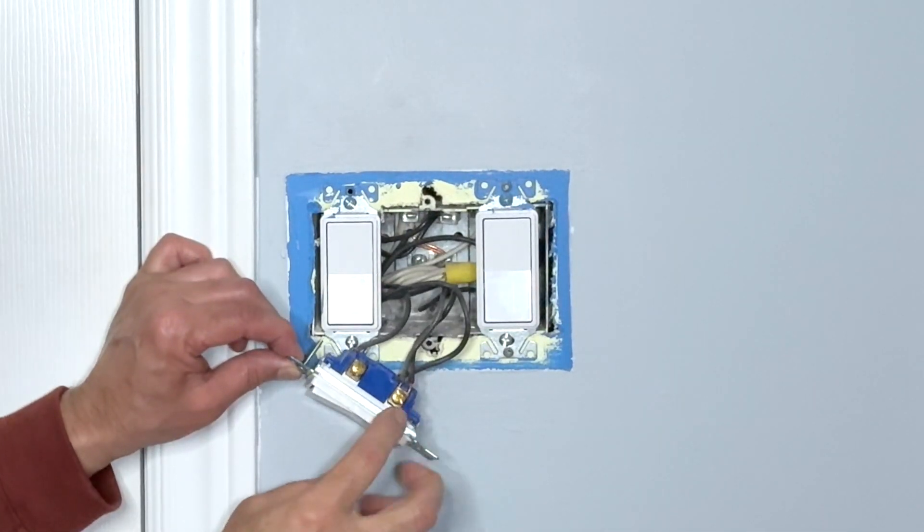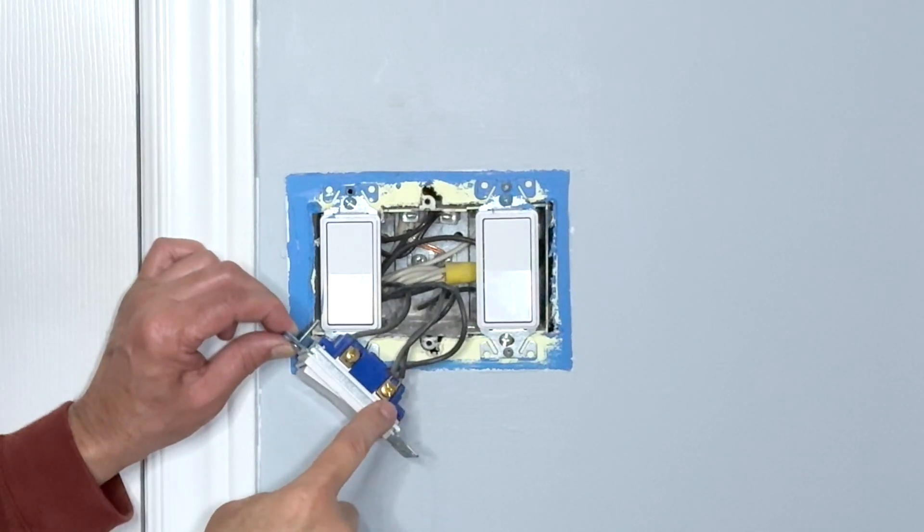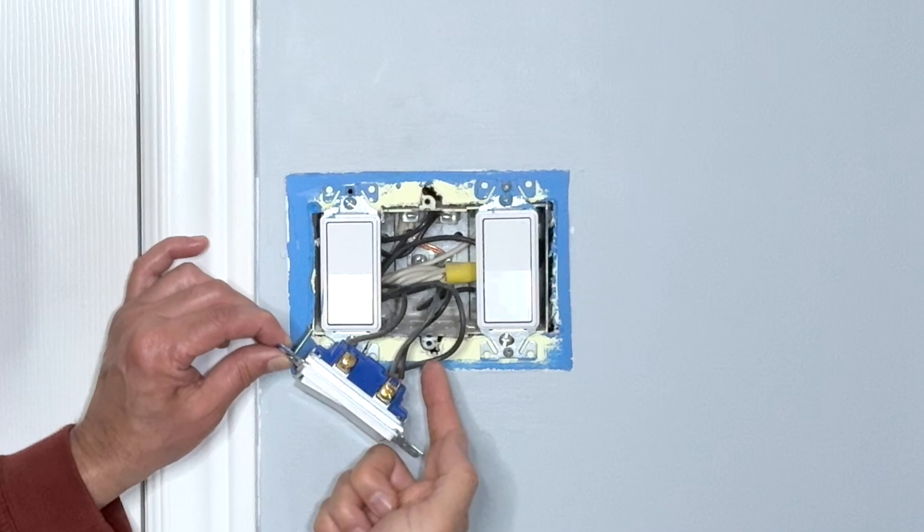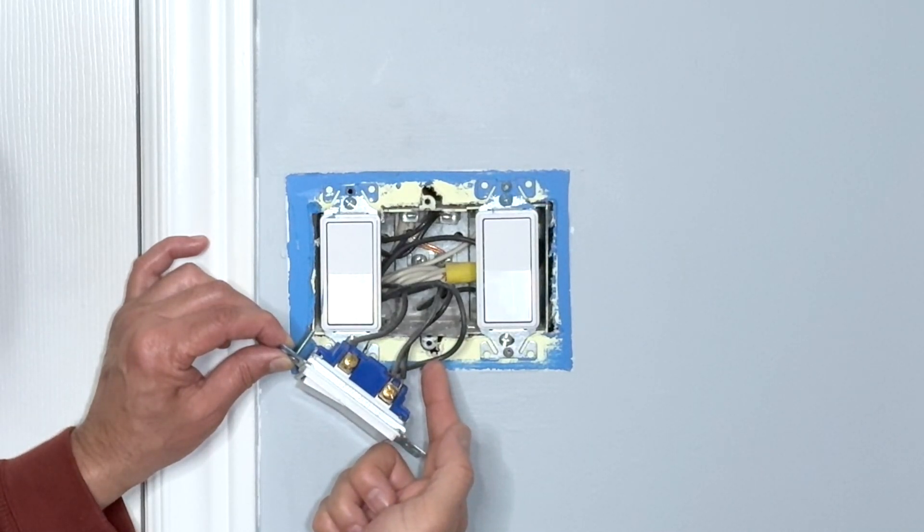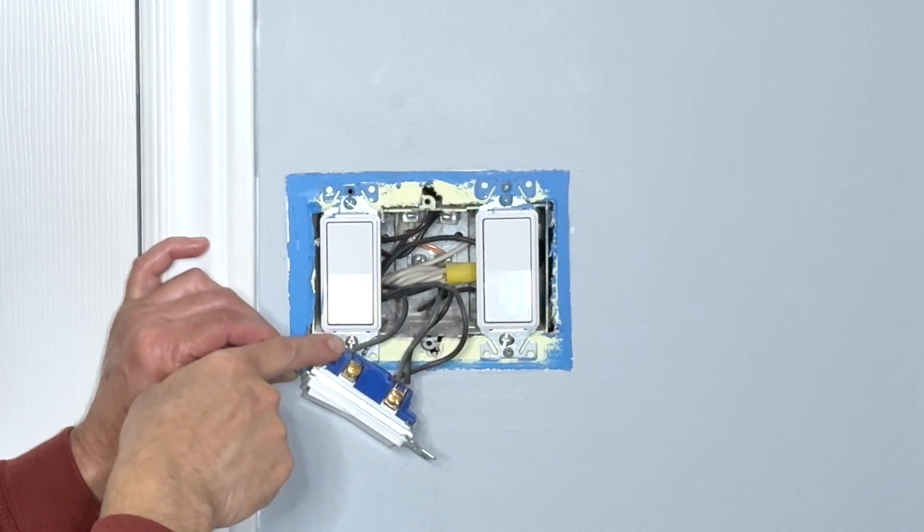Now looking closely at this switch, I can see three black wires connected to the bottom screw. Two wires connected to the screw and one wire, one black wire which is backstabbed here. So most probably this is the line or hot wire. There's one wire backstabbed on the upper screw and this is most likely going to the exhaust fan.